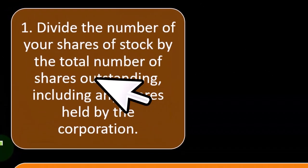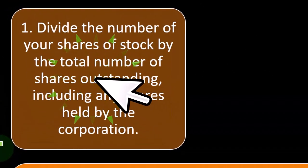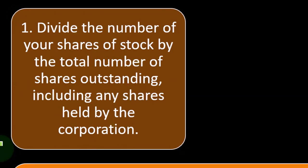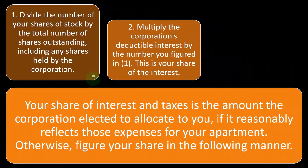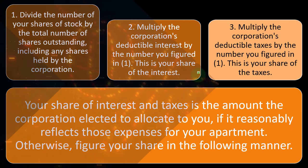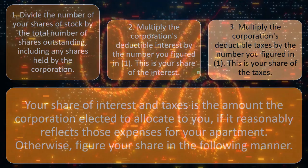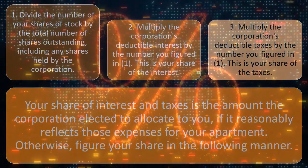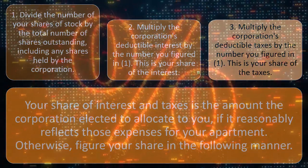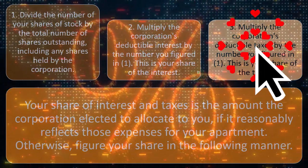First, divide the number of your shares of stock by the total number of shares outstanding — including any shares held by the corporation. That gives you your percent interest. Second, multiply the corporation's deductible interest by that number to get your share of the interest. Third, multiply the corporation's deductible taxes by that same number to get your share of taxes. It's a fairly straightforward calculation.